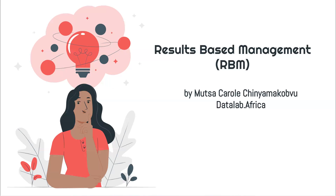Let's get right into it. As we begin and progress, I'd like you to keep three things in mind. Whenever you're working on a project, the principles of RBM are essentially to constantly ask yourself: number one, what do we want to achieve? Number two, what have we achieved? Number three, what can we do differently to increase the chances of meeting our objectives? These three questions are asked constantly.